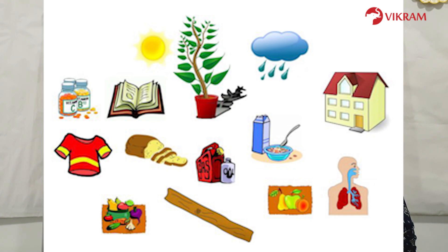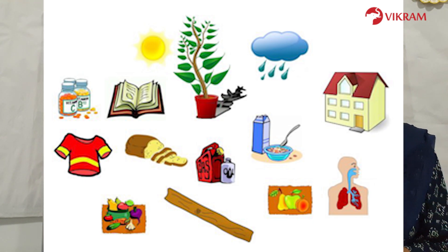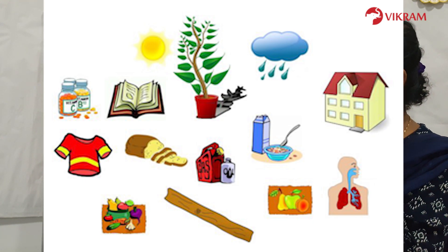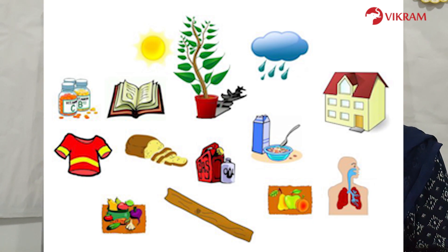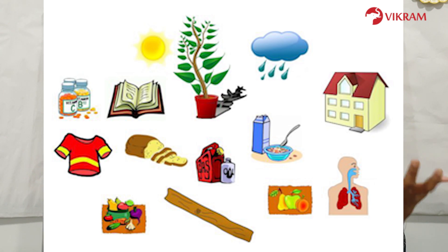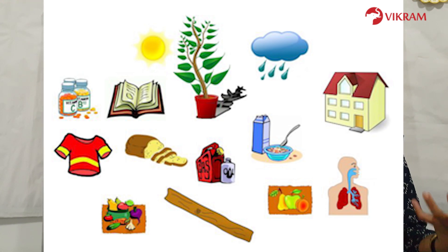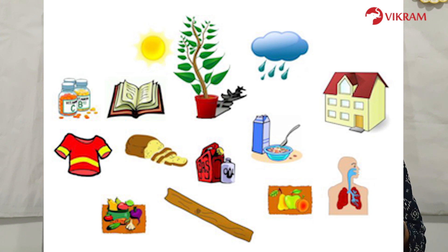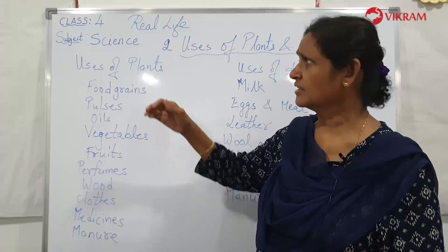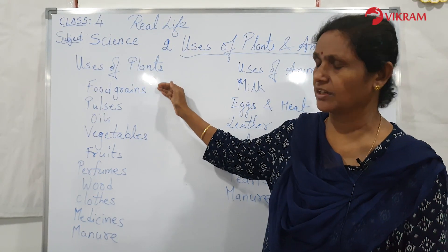All animals and human beings depend on plants either directly or indirectly for food. Uses of plants: we get food, oils, wood, perfumes, and medicines from plants. We also get different types of fibers used in the manufacture of clothes and other useful things from plants.